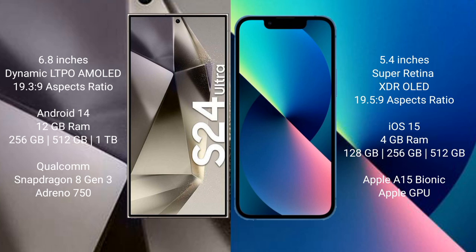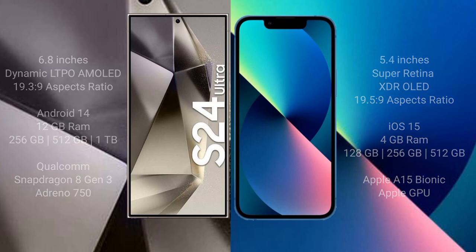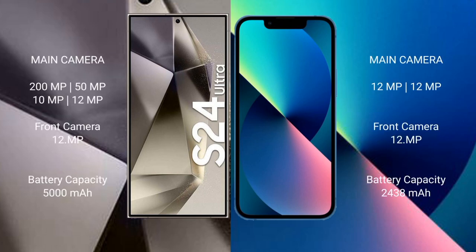The Samsung Galaxy S24 Ultra comes with 12GB RAM and 256GB, 512GB, or 1TB internal storage, with a Qualcomm Snapdragon 8 Gen 3 processor and Adreno 750 GPU. The iPhone 13 Mini comes with 4GB RAM and 128GB, 256GB, or 512GB internal storage, with an Apple A15 Bionic processor and Apple GPU.